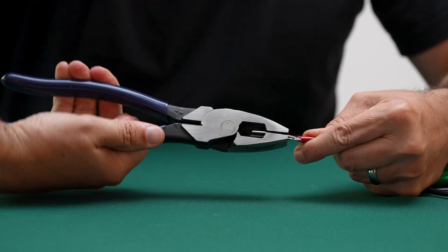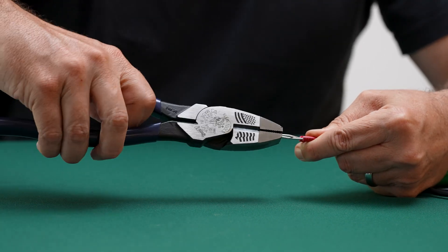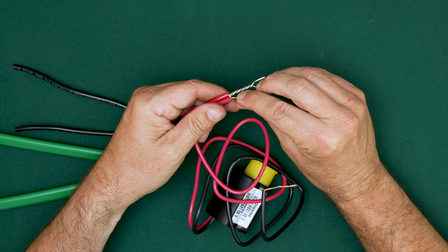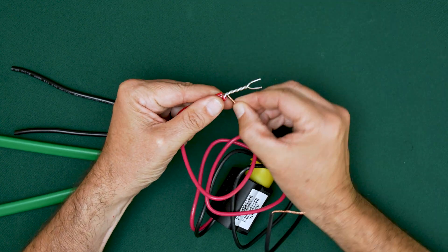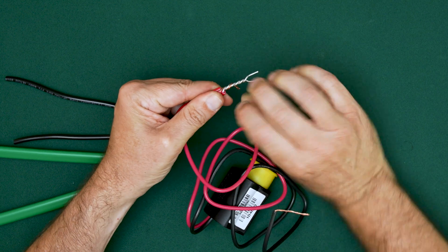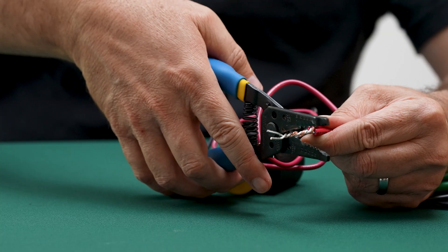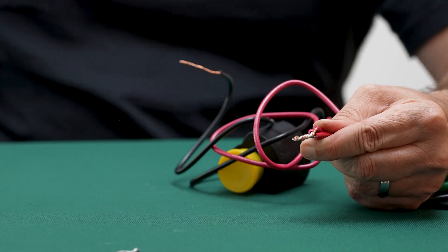Twist the conductors together using lineman's pliers for a strong mechanical bond. Add the IC module lead by wrapping it securely over the splice in a clockwise manner. Then trim all wires to a uniform length of about 5 eighths of an inch.